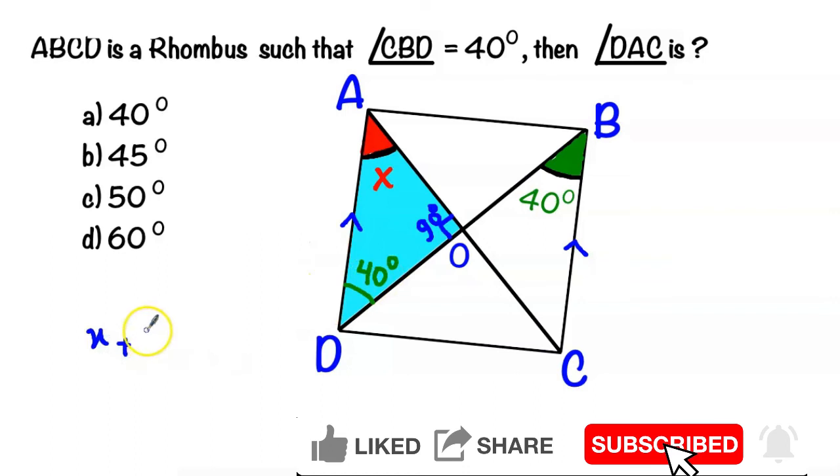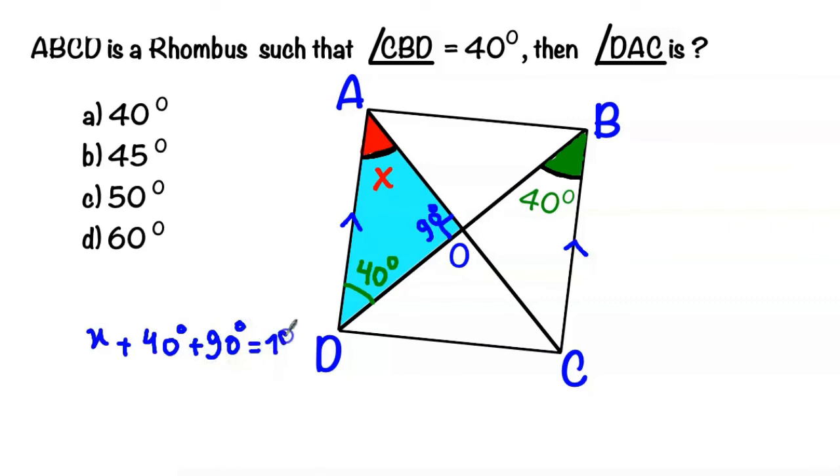So x plus 130 equals 180. Subtract 130 on both sides, we will get x equal to 50 degrees.